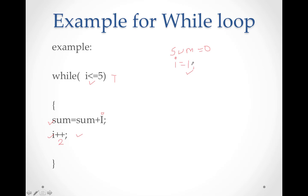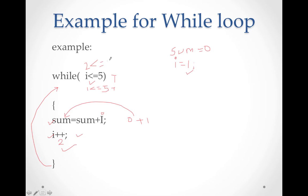i starts equal to 1, written outside. Then i is compared in the while condition; 1 compared with 5 is true. If true, sum equals 0 plus i equals 1, stored in sum. Then i++ stores 2. The bracket closes, it moves back to while — 2 is compared with 5, true. Then sum equals 1 plus 2 equals 3, and so on. Same way as the for loop.